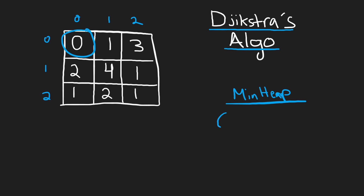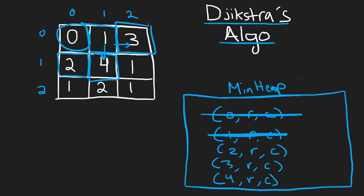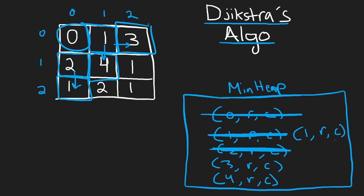Dry run: initially we have zero in our min heap. We pop it and get its neighbors: height one to the right and height two below. We add both — one with its coordinates and two with its coordinates. We pop the one with height one. We look at its neighbors: right and bottom, which have heights three and four. We add those to the heap as max heights three and four. Then we pop the two and look at its neighbors.